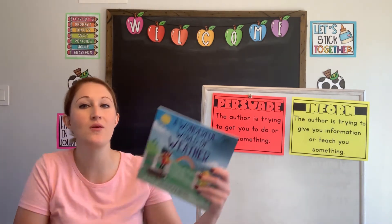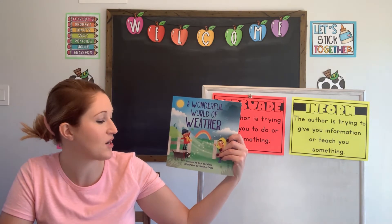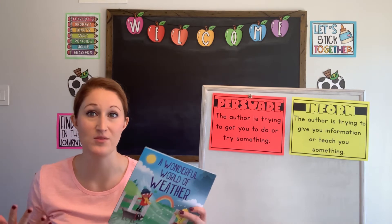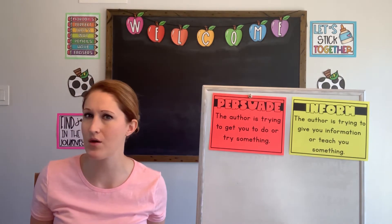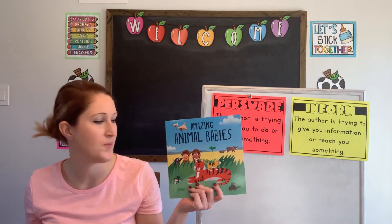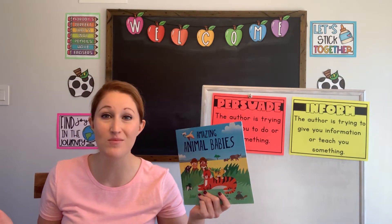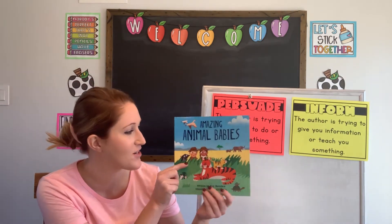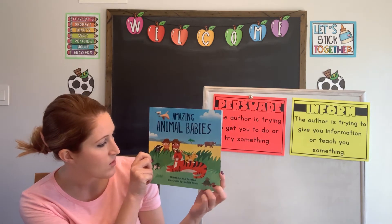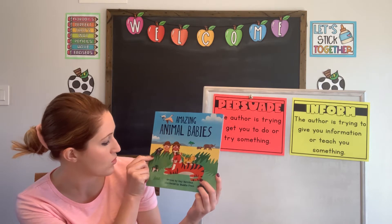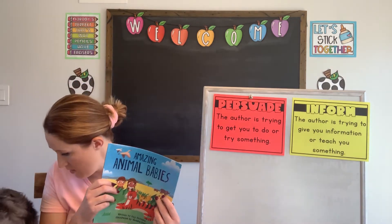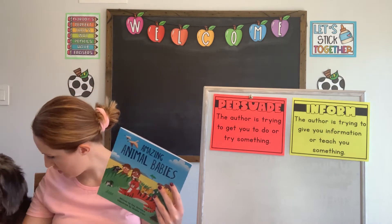A couple of weeks ago we read the book A Wonderful World of Weather, where we learned about all different types of weather. So what do you think we might learn about in this book? Yeah, different animal babies. We can already see some on the front cover — elephants, tigers, turtles, a dog, and some mice. Lots of different animals. We even have our own little animal here.